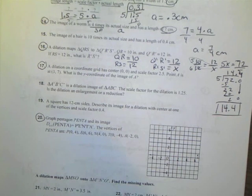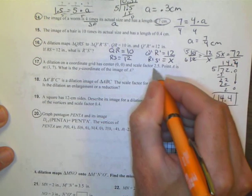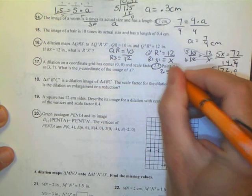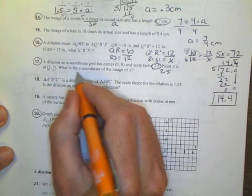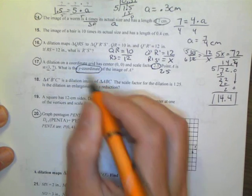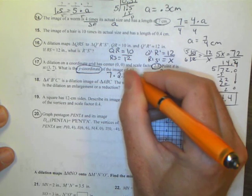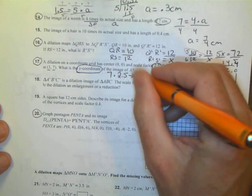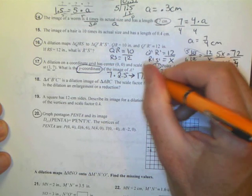Number 17. The dilation of the coordinate grid has center (0, 0) and scale factor, there's my scale factor, 2.5. Point A is at (3, 7). This wants to know what is the Y coordinate. So my original Y is 7 times the scale factor 2.5. My new Y coordinate with the scale factor, 7 times 2.5, is 17.5 for number 17.